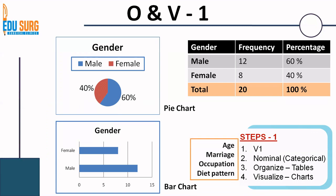Similarly, you can use nominal data for age, marriage, occupation, as well as diet pattern when you use these data in categorical fashion. For example, married, unmarried, or not wishing to say; occupation — you can have professional or employee or similar categories; or diet pattern — veg, non-veg. All of these categorical data can be organized and visualized in the same fashion.